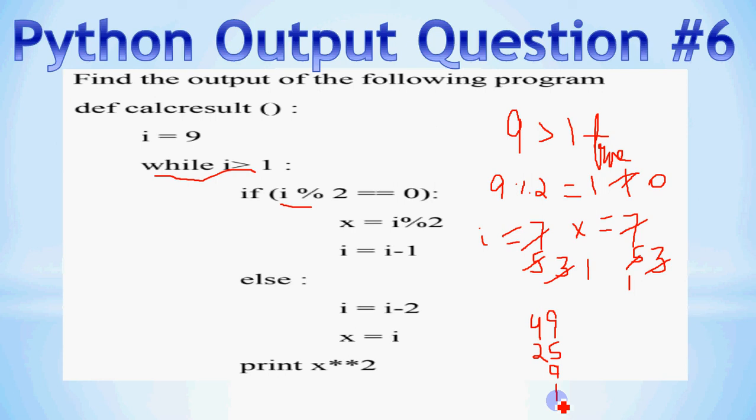Aur aapke paas joh output ho ga, woh ho ga 49, 25, 9, 1, all 4 values, on 4 different lines. So 4 values print ho jayengi, alag-alag line pe aapke paas. And that is the output of the given code.